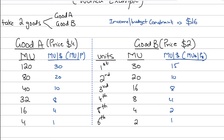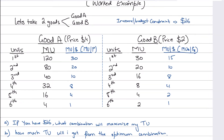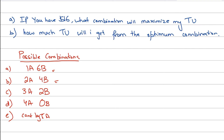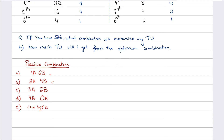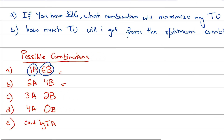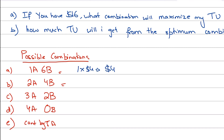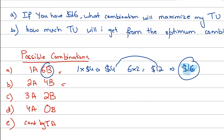Now there's one more thing I need to explain: the possible combinations of goods A and B that we can buy with 16 dollars. For example, one unit of A (4 dollars) and six units of B (12 dollars) totals 16 dollars — that's one valid combination. Another is two units of A and four units of B: 2×4 + 4×2 = 8 + 8 = 16 dollars.